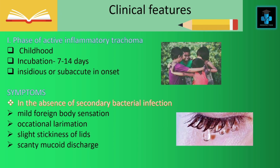Now let's see the clinical features. There are two major phases. The first phase is the phase of active inflammatory trachoma, which is more common among children. It has an incubation period of 7–14 days and the mode of onset is insidious or subacute. In the absence of secondary bacterial infection, the main symptoms are mild foreign body sensation, occasional lacrimation, slight thickening of the lids, and scanty mucoid discharges.